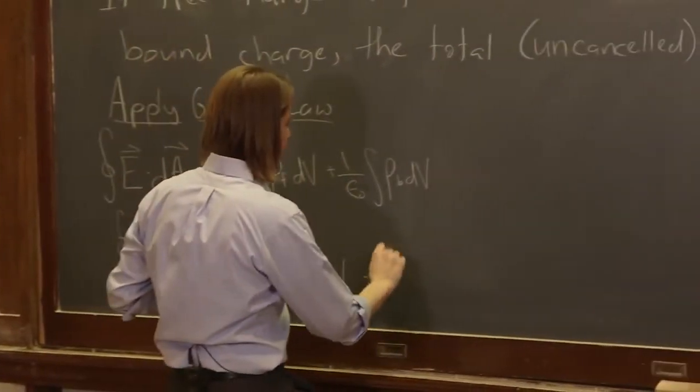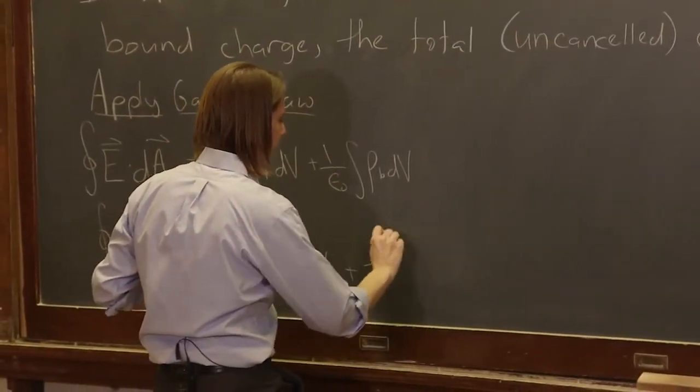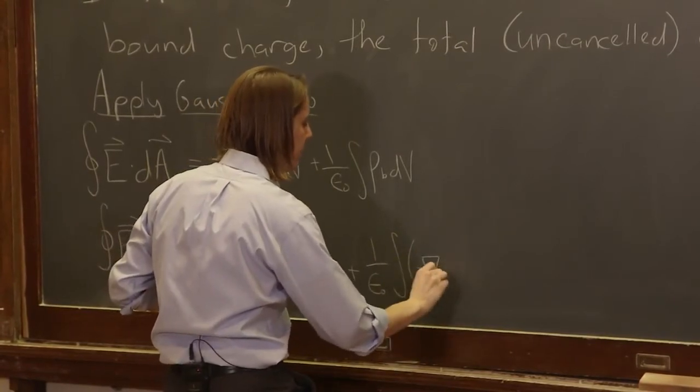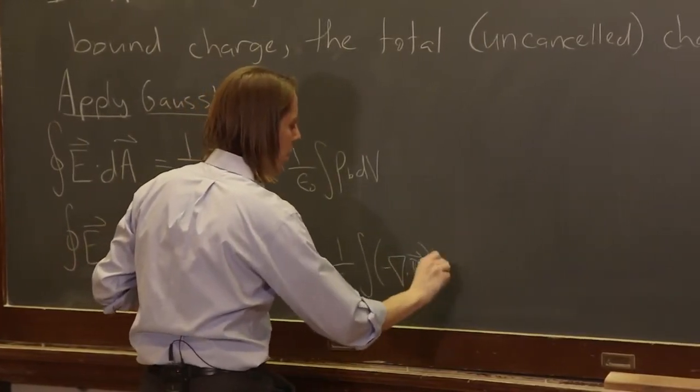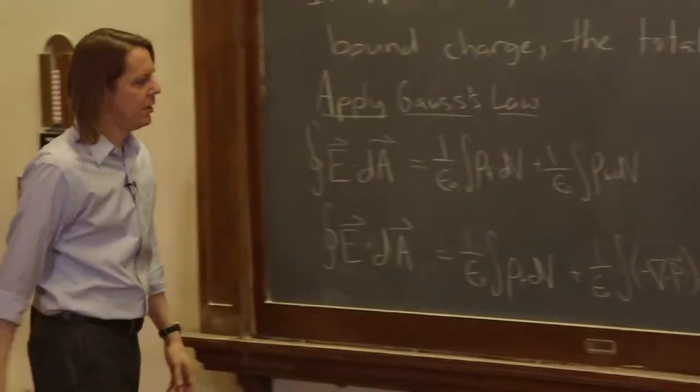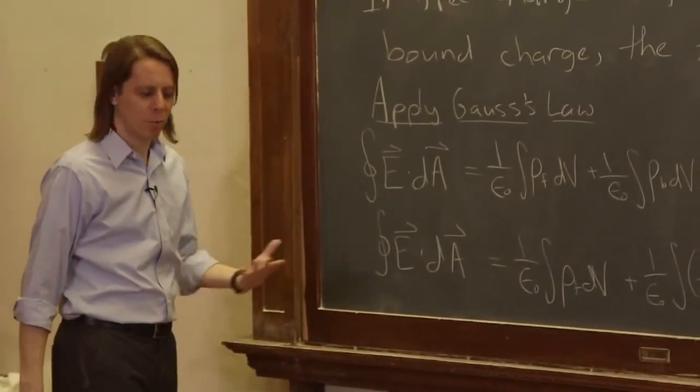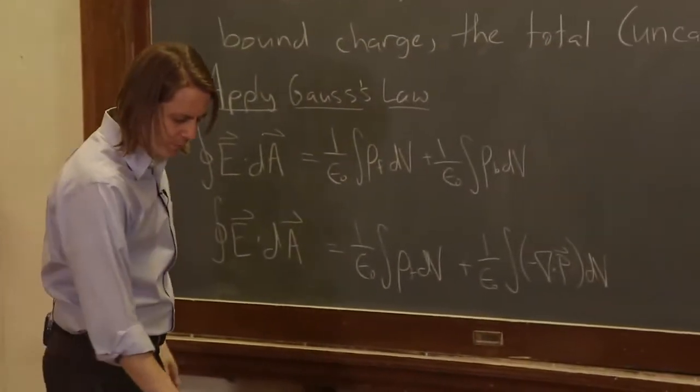So we could write this as one over epsilon naught, the integral of minus the divergence of the P. We're trying to work on this in terms of fields.